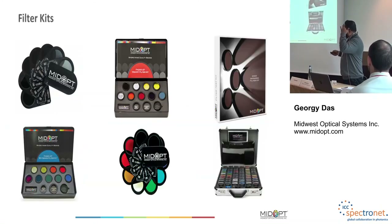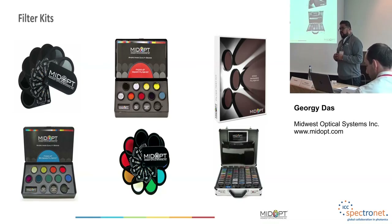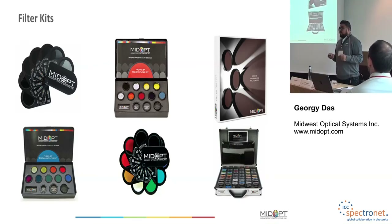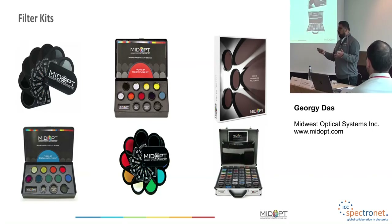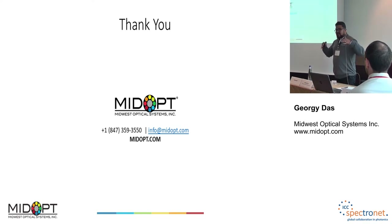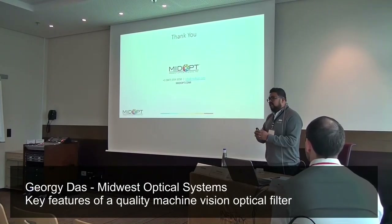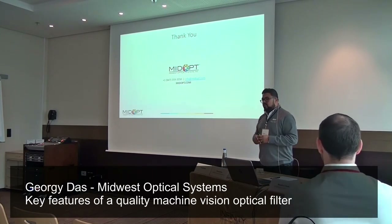The last thing we get asked about a lot is: how do I know what filter to select? That's where one of our filter kits comes in — it includes lots of different options so you can test different filters on your lenses and cameras to get an idea of what to select. We're actually giving one of these filter kits away for free. Come by our booth downstairs in the first room, drop off your business card, and we'll do a drawing. That's my time — a lot of information in 20 minutes. If you have more questions, we have a couple of minutes now, or please find me or my colleague Mike. Thank you.